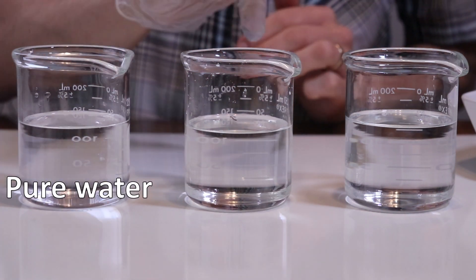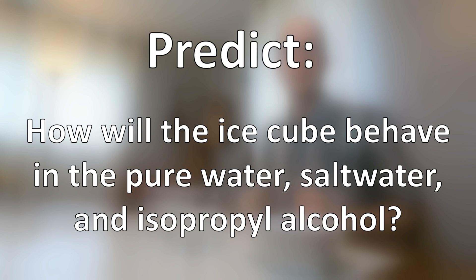In front of me, I have some colored ice cubes. I just added a little bit of food coloring in them before freezing them. And I also have three different liquids: pure water, salt water, and isopropyl alcohol, that's rubbing alcohol. I'm going to drop an ice cube into each liquid, then let them melt and see what happens. Do you think the ice will do anything different in these different liquids? Take a moment to pause the video and predict what you think might happen.